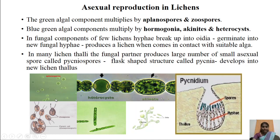In case of zoospore formation in green alga, zoospores are motile spores provided with flagella. Since there are two flagella, their to-and-fro movement helps in motility. Zoospores, after liberation from the zoosporangium, swim in a thin film of water and when they come in contact with suitable fungal hyphae, they develop into new lichen thalli.